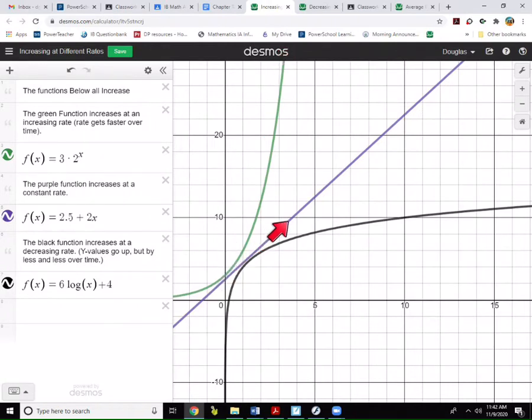On the other hand, this purple function is also increasing its y values, but the change in y values is constant. So we would say that in the purple function, the y values are increasing at a constant rate.